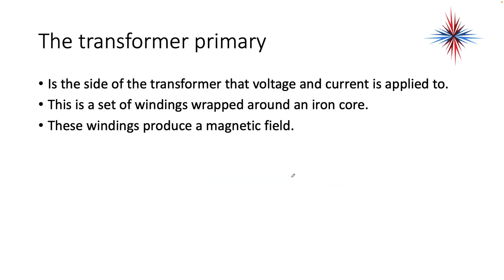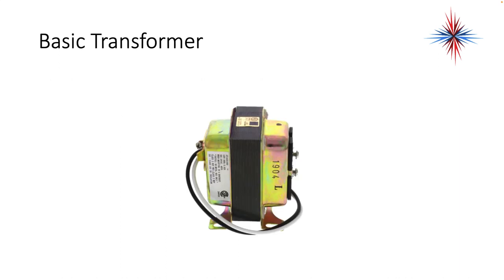The transformer primary is the side of the transformer that voltage and current is applied to. It's a set of windings wrapped around an iron core, and these windings produce a magnetic field. This is a transformer — my primary wiring in this case is the black and white. From experience, when you have a black and a white wire on a transformer, this is going to be a 120-volt primary. And because this is an HVAC transformer, this is going to be labeled 24.